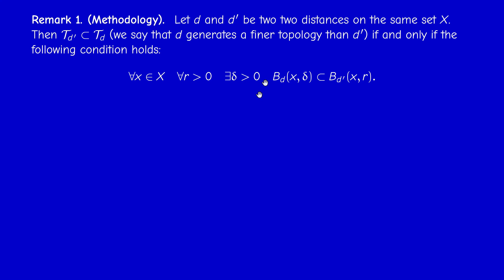If this condition holds, then T_{d'} ⊆ T_d. We have to prove two implications, and these follow from the arguments used in the previous proposition. Pay attention to the reversal of order: the distance corresponding to the bigger topology corresponds to the smaller ball.